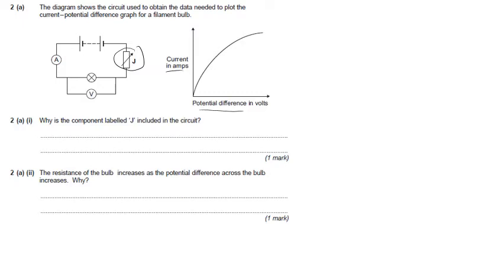So why is component J included? Well, that is to either change the voltage in the circuit or change the resistance in the circuit. Other acceptable answers included to change the current in the circuit as well, or to change the potential difference, or you could have said to increase or decrease it.